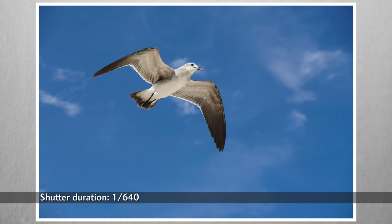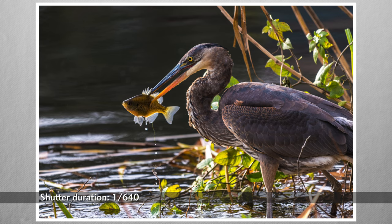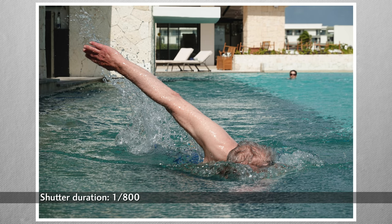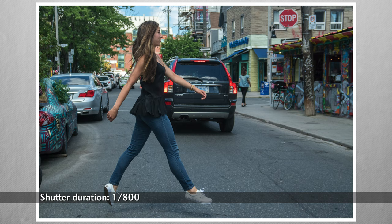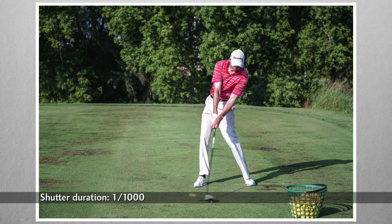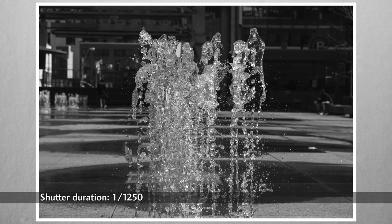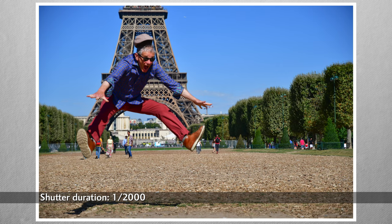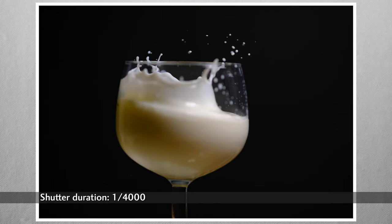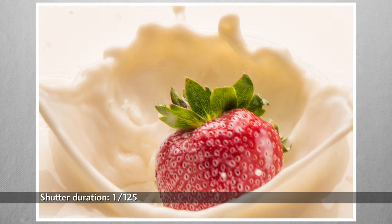Seagulls at 1/640, still-dripping fish at 1/640. At 1/800, a swimmer coming towards us and an airborne pedestrian. Although a shutter speed of 1/1000 seems fast, it's not enough to stop Rob's swing, if that's your intent. This fountain froze at 1/1250. At 1/2000, I'm frozen mid-air. At 1/4000, about as fast as most cameras go, the splash of an object falling into milk. But a flash, which illuminates the scene for a very short duration, also stops action, even with a slow shutter like 1/125.